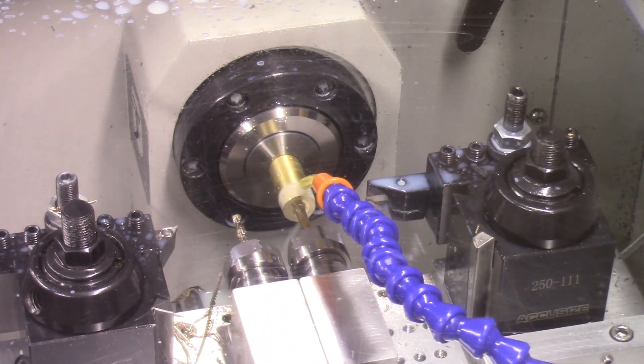Next I'm using the 10-32 tap to rigid tap the hole in the center of the bar.